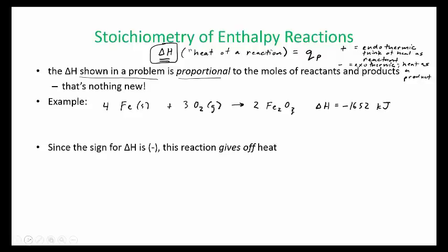So since the sign for delta H is negative, that means this reaction gives off heat. And so what this means is for every four moles, so for every four moles of iron, it creates this much heat.